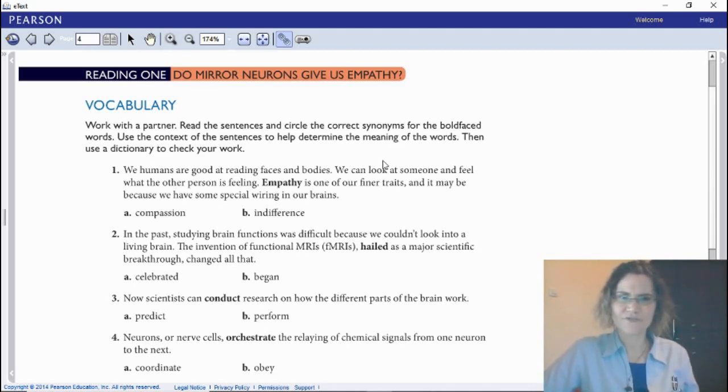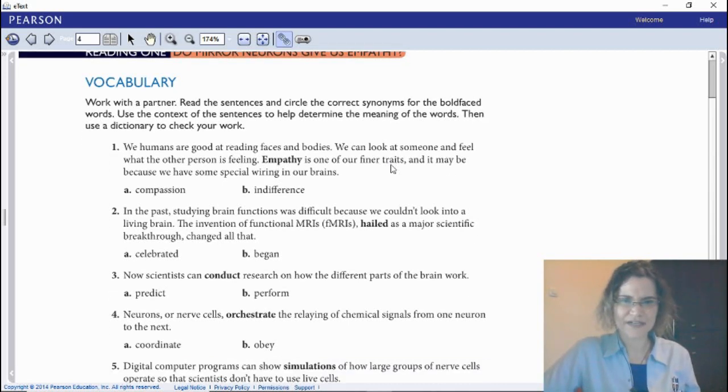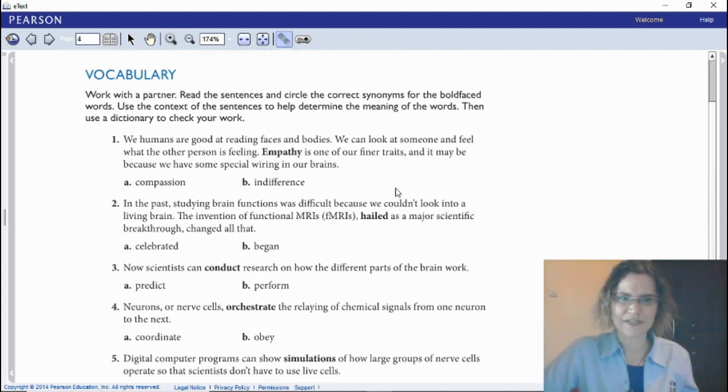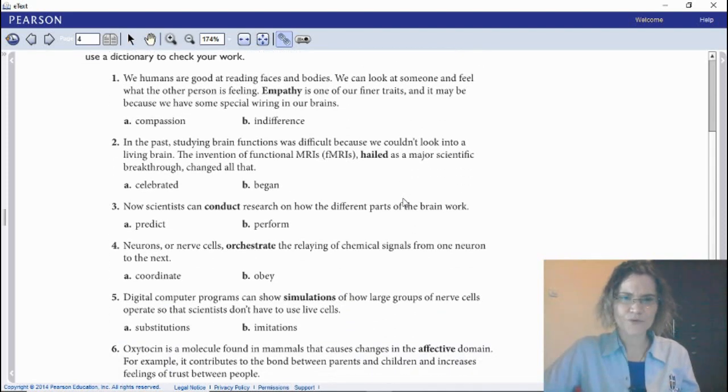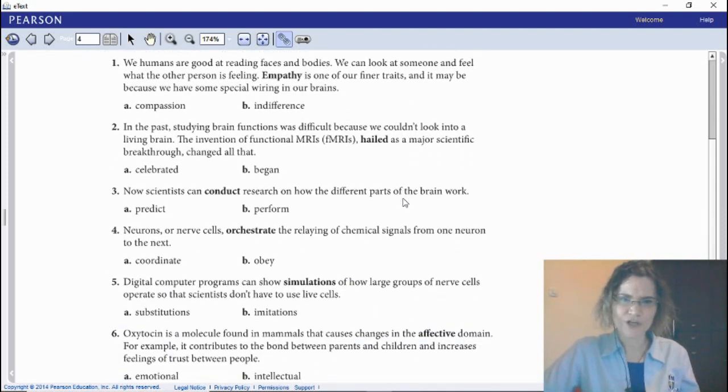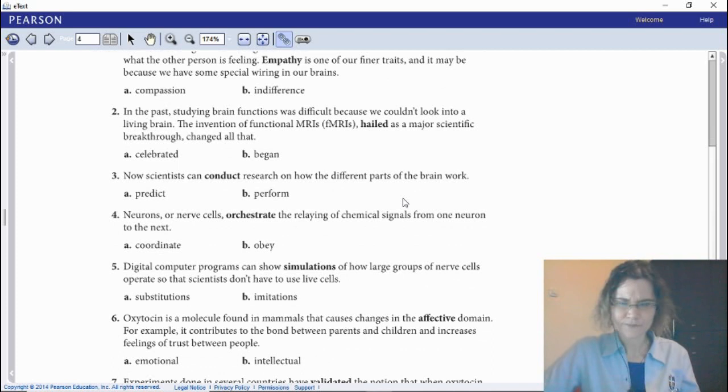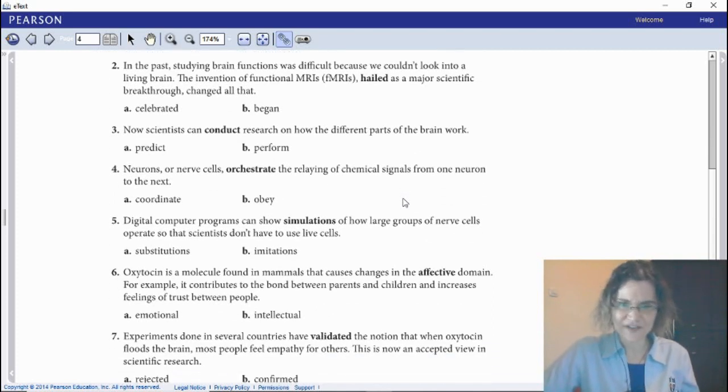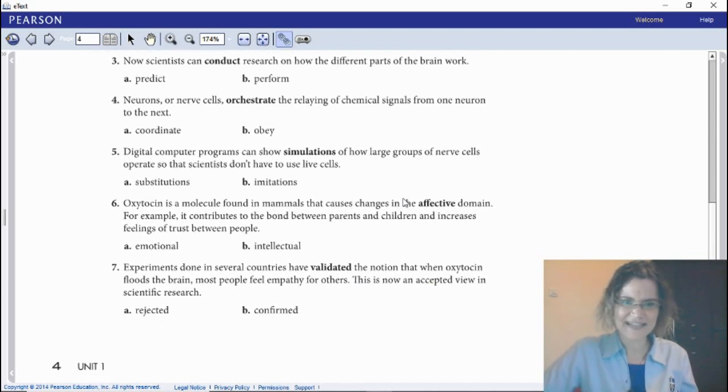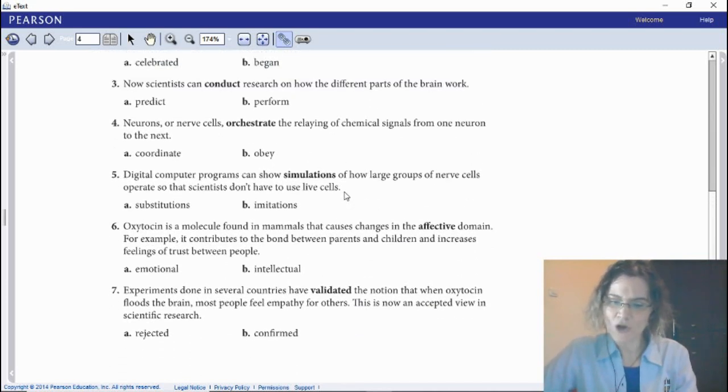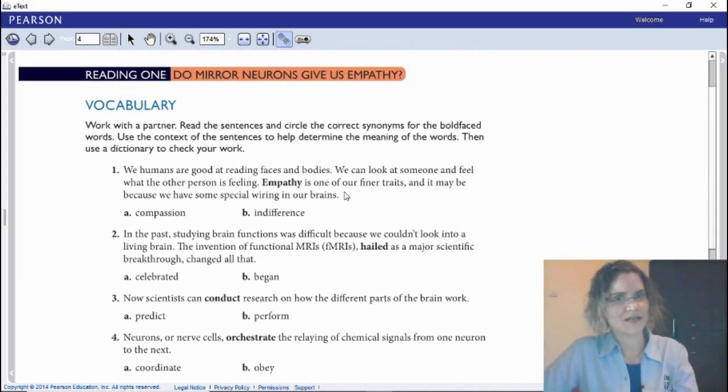First, we're going to focus on the vocabulary. The bold-faced words: number one, empathy; two, hailed; three, conduct; four, orchestrate; five, simulations; six, effective; seven, validated; eight, skeptical; nine, go overboard about; and ten, transmitting. That's on the next page.